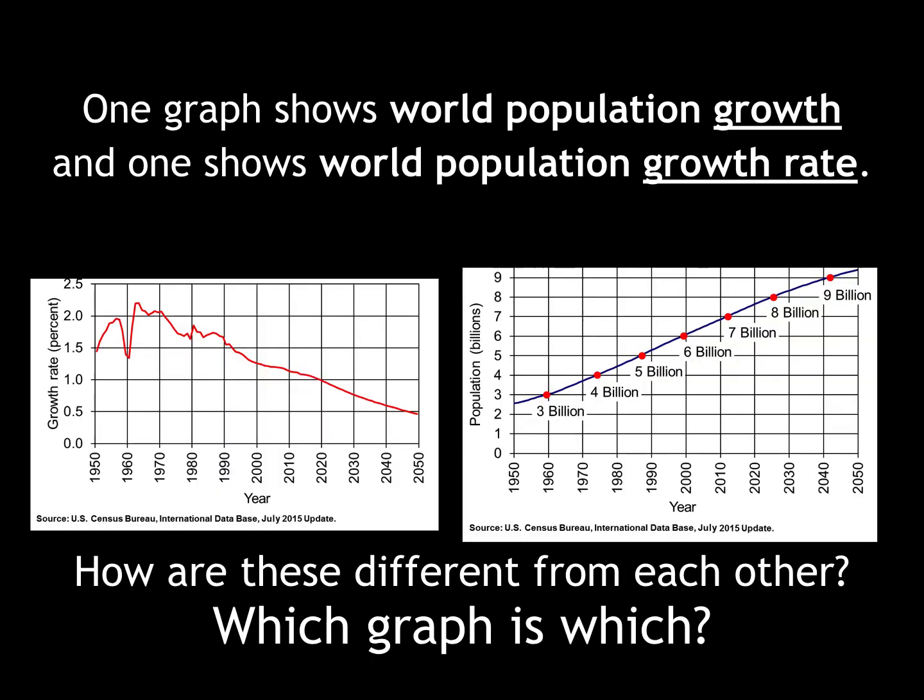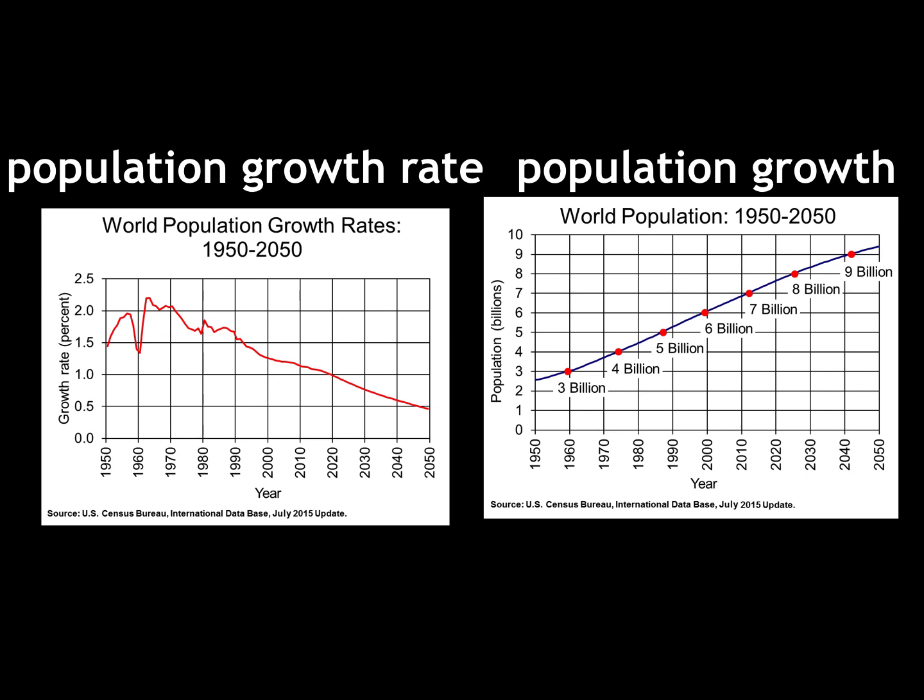Analyze these graphs. One graph shows world population growth, and one shows world population growth rate. How are these different from each other? We can see that the graph on the left shows world population growth rate. The rate of growth is actually going to be declining. However, the world population is still growing, because we have so many people on the planet.